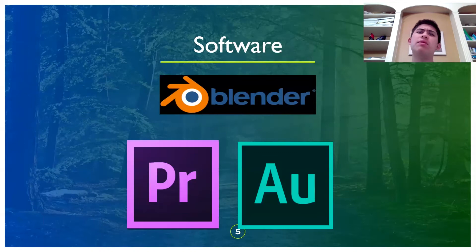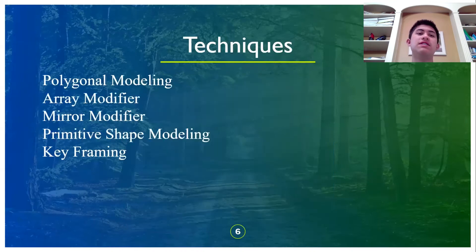We also used Premiere for text animations. Adobe Audition was used for sound design, including the screaming and the screeching of the roller coaster. Some of the techniques we used was polygonal modeling to model the track, using primitive shapes such as cylinders for the rails and rectangular prisms for the connectors. We only had to model one part of the track thanks to the array modifier, which allowed us to duplicate the track without having to model it over and over again.